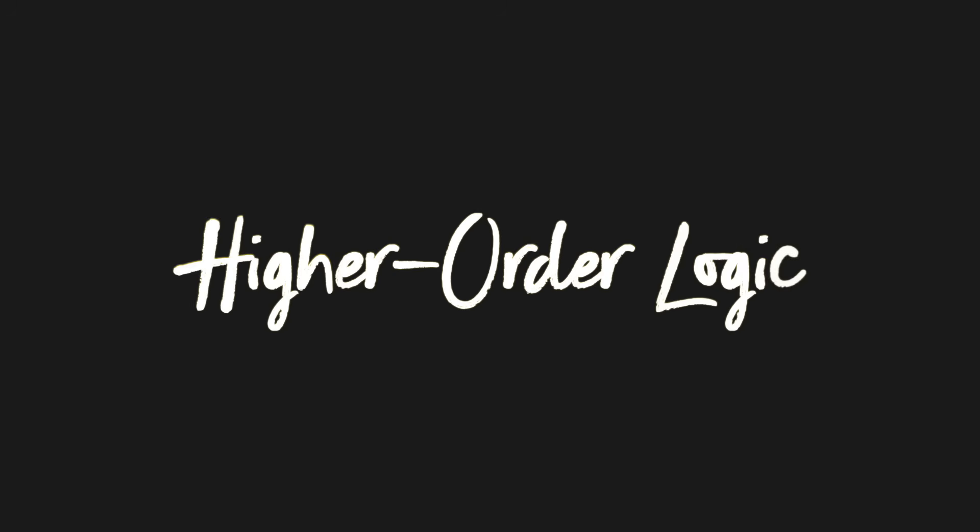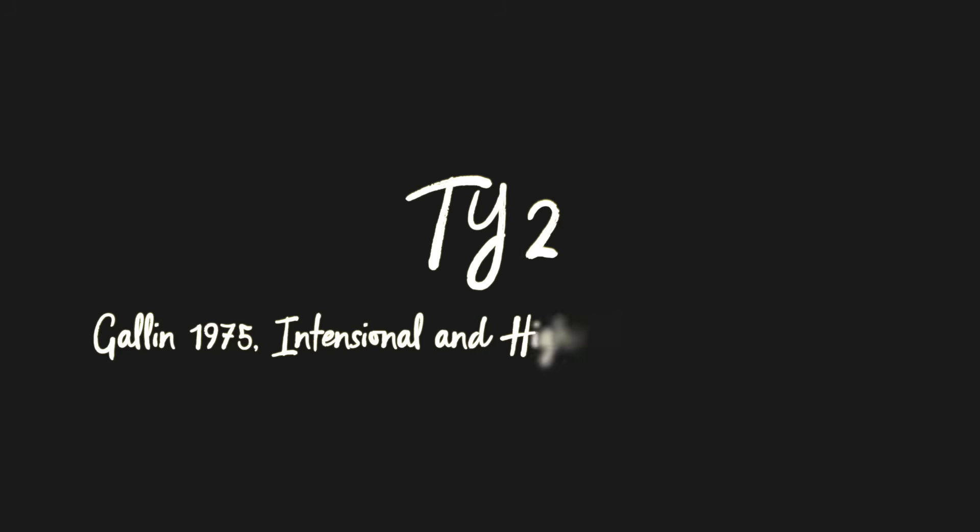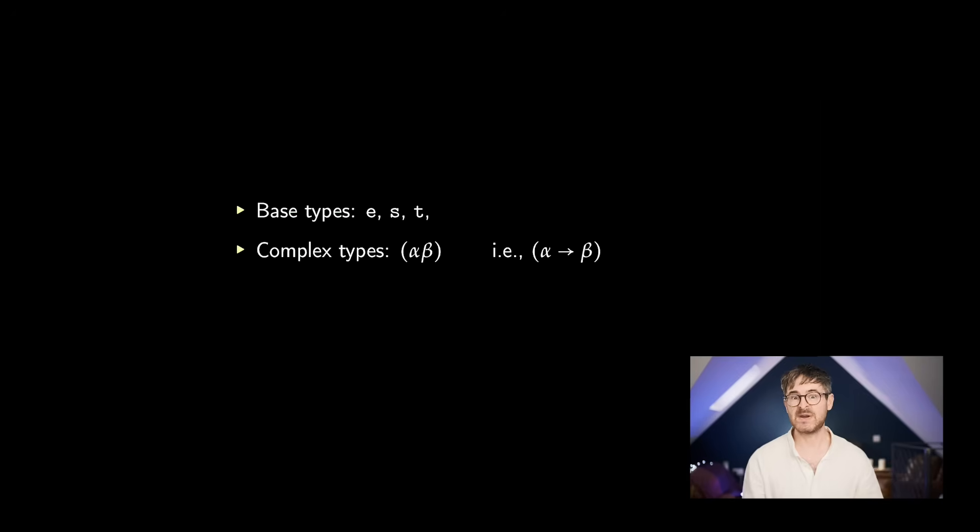Let me give you an example of one particular higher order logic. So this is from Galen, 1975, it's called TY2. So to define it, first of all, we define the types. We're going to have three base types. We've got E for individuals, we've got S for, in effect, possible worlds or world-time pairs, and we've got T, the truth values. And the complex types of the theory are just the ones that we saw before. So you give me two types, alpha and beta, and I can put them together in a new type from alpha to beta. Sometimes we write it without the arrow, basically just to save space on paper. So that's the types.